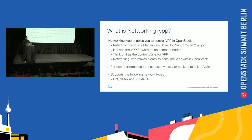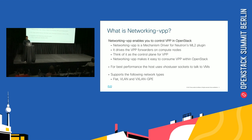Now, what is networking VPP? Networking VPP enables you to control VPP within OpenStack. If you try to install VPP and use it without networking VPP, you will have to directly work with it, and that is pretty complex. Networking VPP makes VPP easier to consume within OpenStack. For attaining this high performance, vhost uses sockets to talk to virtual machines. We support the following network types today: flat, VLAN, and VXLAN GPE. Essentially, networking VPP is like a control plane for the VPP platform.